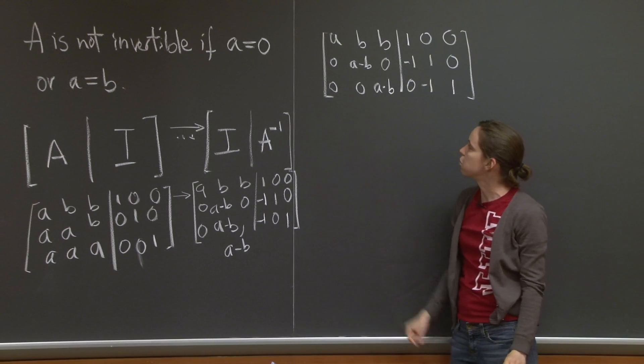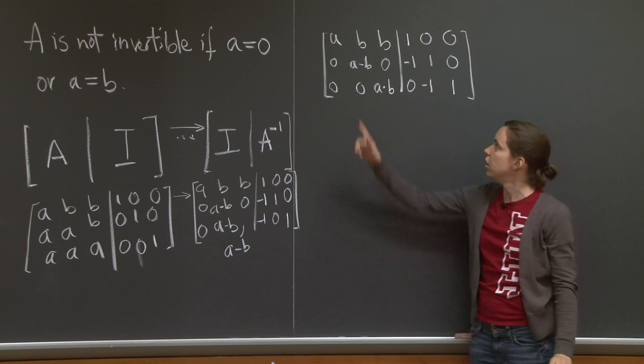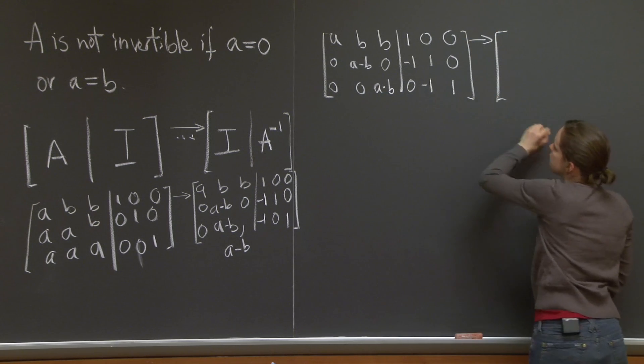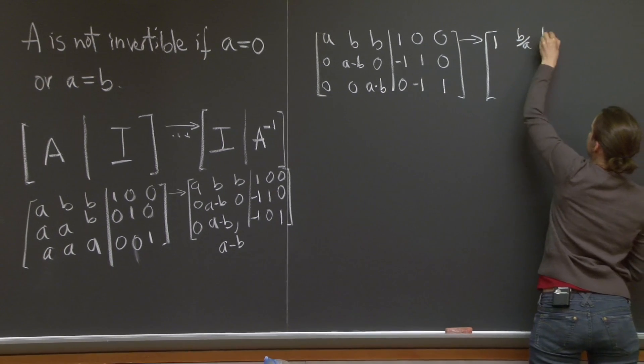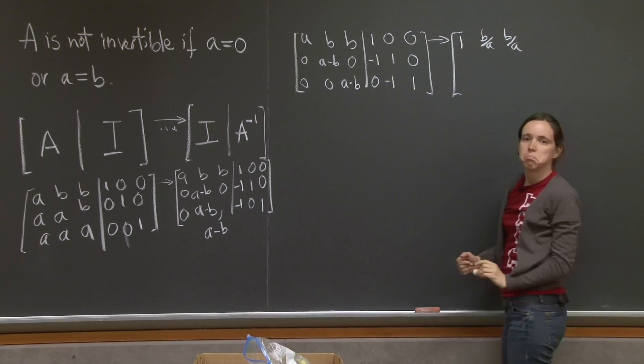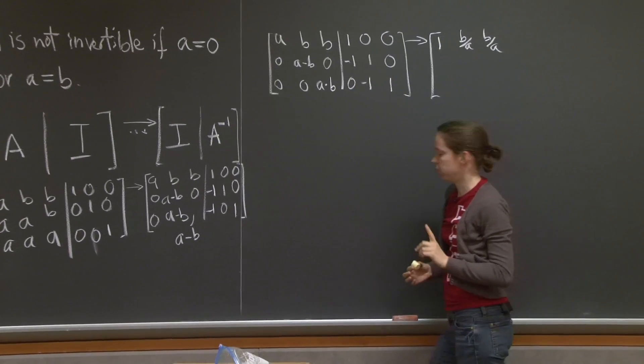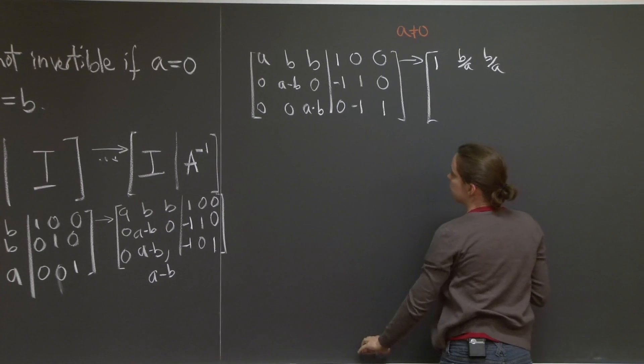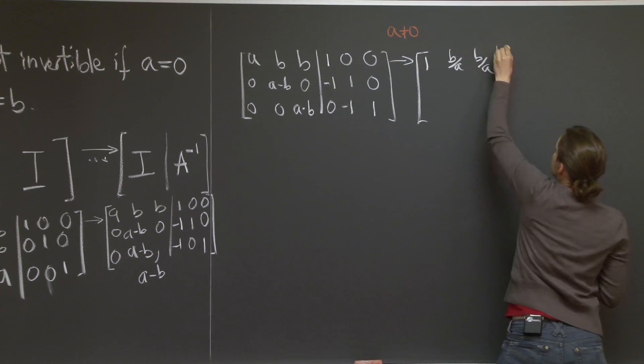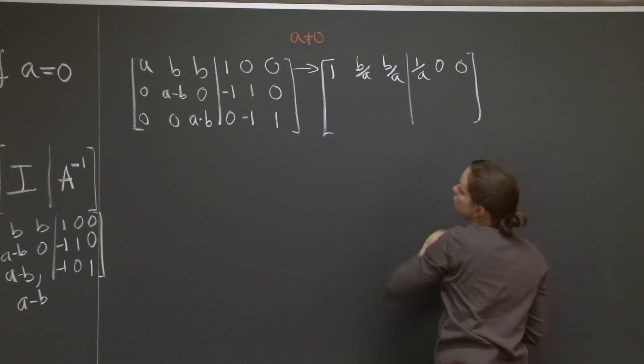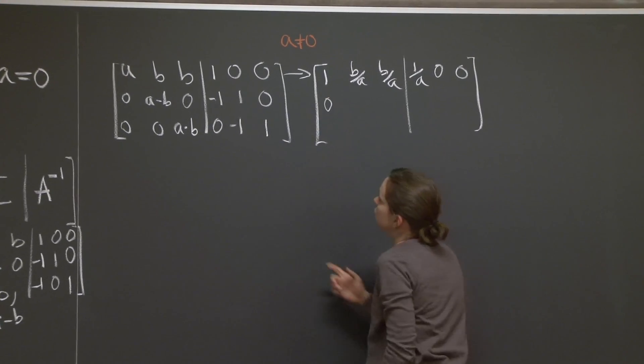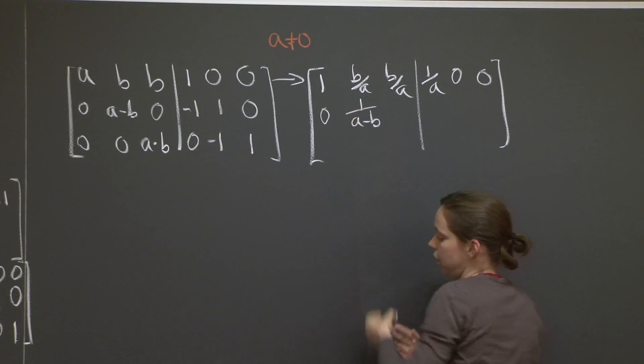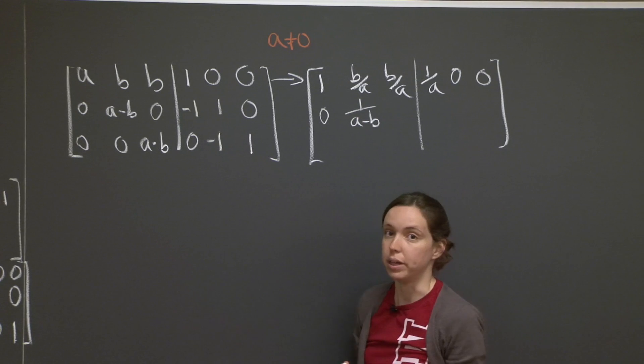We already have 0's down here. It's looking more and more like the identity matrix. So we have to turn all these diagonal entries into 1's. So let's do that now. 1, b over a, b over a. I'm dividing by a. A better not be 0. Let me signal that here. a different from 0. 1 over a, 0, 0, 0, I want to make that into a 1. So 1 over a minus b, and you guessed it, a minus b has to be different from 0.